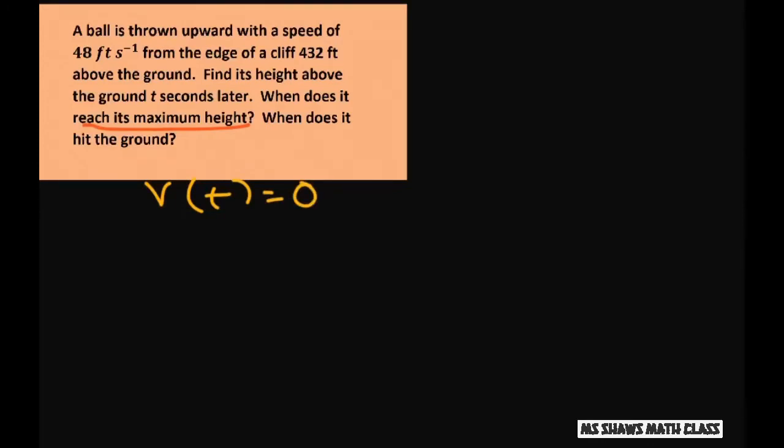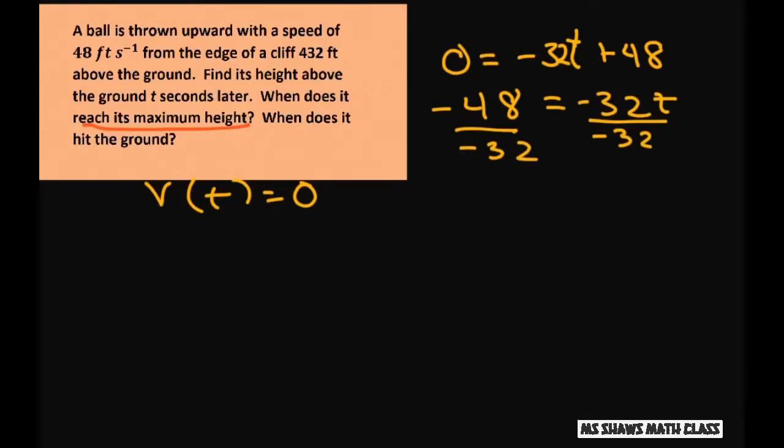So we set 0 equal to negative 32t plus 48. Subtract 48, divide both sides by negative 32. That gives you t equals 1.5 seconds.